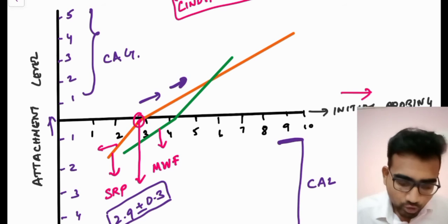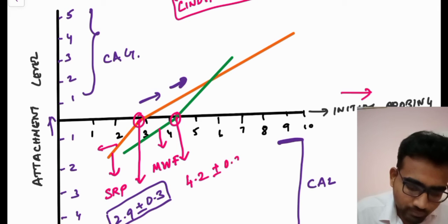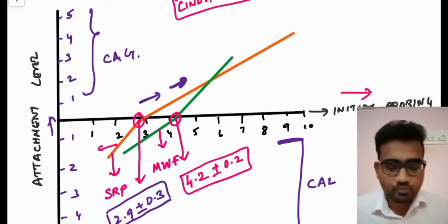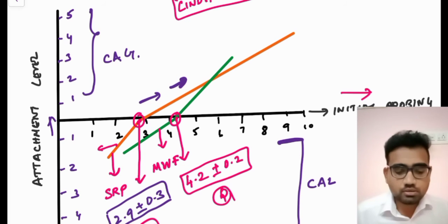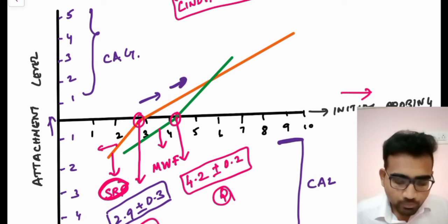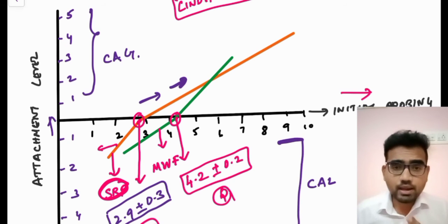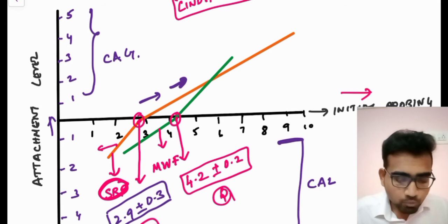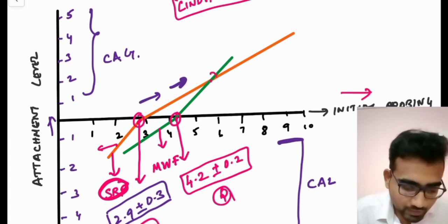Coming to modified Widman flap: the critical probing depth for modified Widman flap is 4.2 mm, plus or minus 0.2. Every number in this video can be a potential MCQ. So, to summarize: the critical probing depth for SRP is 2.9 ±0.3, and for modified Widman flap it is 4.2 ±0.2.